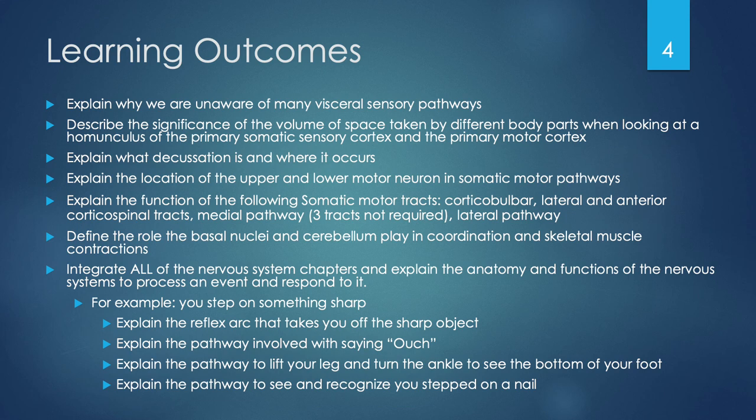We're going to integrate all of the nervous system chapters — this is where everything keeps building upon itself. We'll explain the anatomy and functions of the nervous system to process an event and respond to it. For example, if you step on something sharp, you'll integrate all this information to explain the reflex arc that takes you off the sharp object. You'll explain the pathway for saying 'ouch,' for lifting your leg to see the bottom of your foot, and for seeing and recognizing that you stepped on a nail.